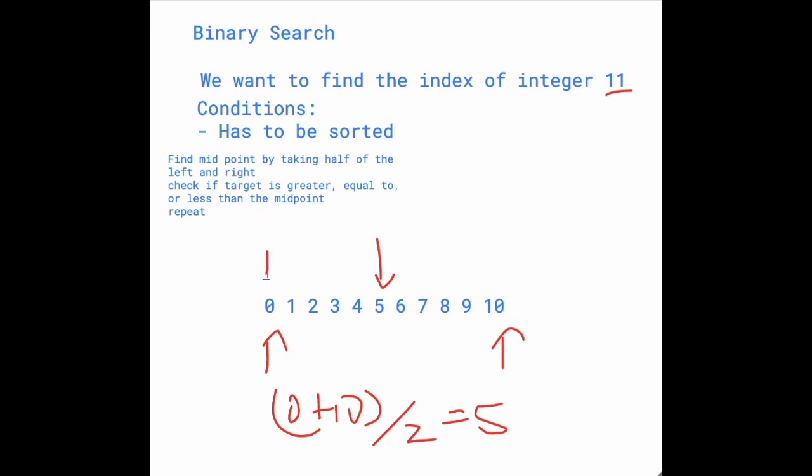Firstly, we took 0 plus 10. And so that's basically the left index plus the right index and divided by 2. So right now, since it's the first iteration, it's really easy to visualize. So obviously it's just going to be 10 over 2.